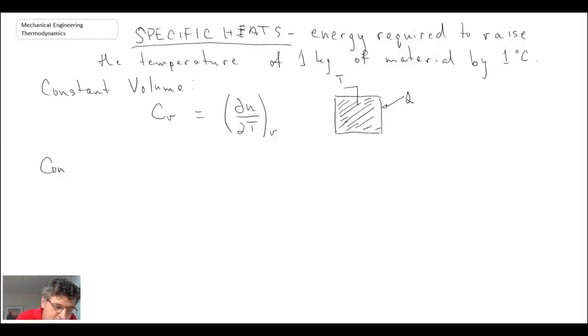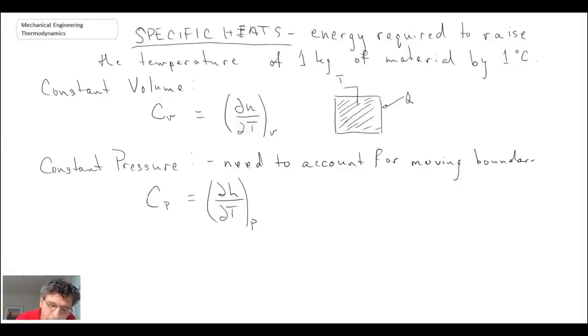If you look at constant pressure, or the specific heat at constant pressure, we use capital C with a little p to denote the fact that we're looking at a specific heat at constant pressure. The definition for this is the partial of enthalpy with respect to temperature at constant pressure, and we need to account for boundary work here.